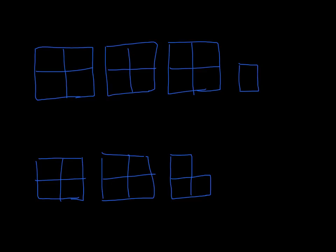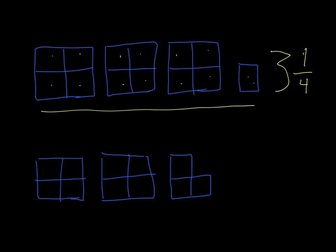Now we've got some boxes. We can see that we've got 1, 2, 3 complete boxes and then one partial one. Each box has 1, 2, 3, 4 pieces, so our denominator is going to be 4. How many whole boxes do we have? We've got 1, 2, and 3 — so the whole number is 3. And we have one piece in the partial box, so the numerator is 1. This picture can be represented by the mixed number 3 and 1 quarter, and that can't be simplified because 1 quarter is as small as you can go.